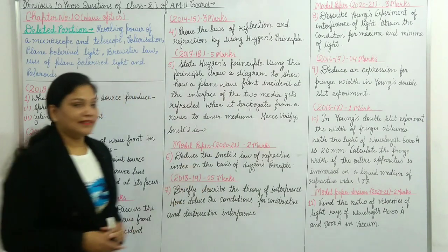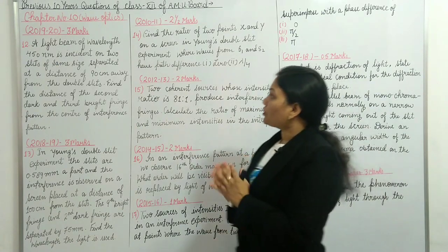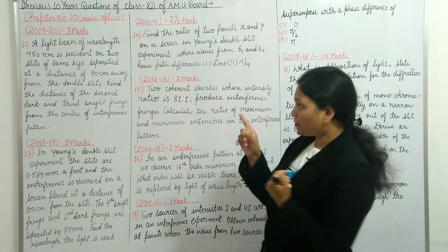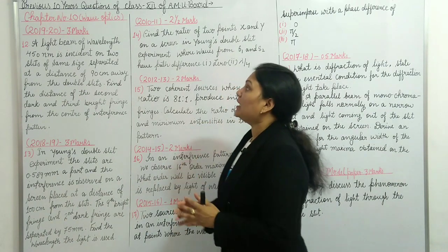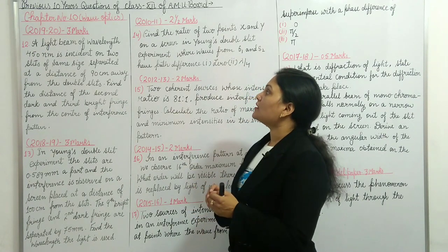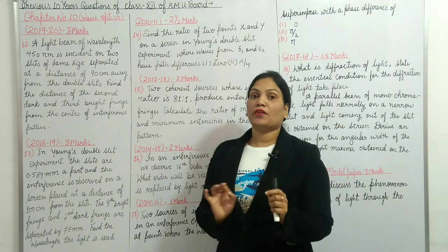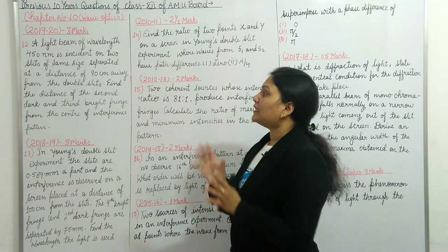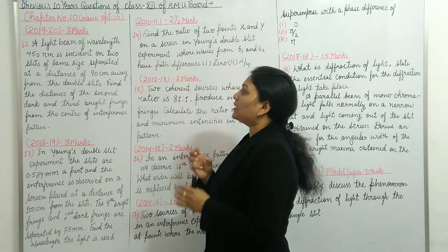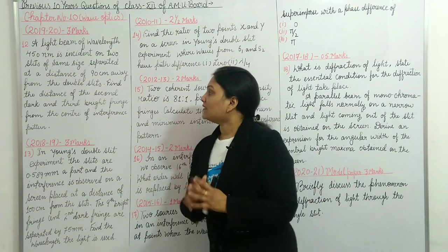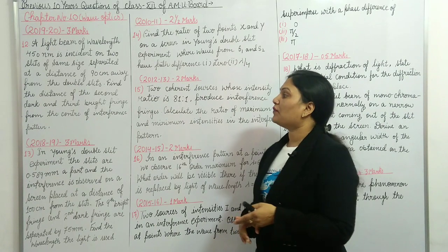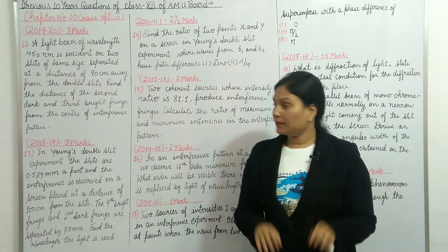Question number twelve: a light beam of wavelength 450 nanometers is incident on two slits of the same size, separated at a distance, and the screen is 90 cm away from the double slits. Find the distance of the second dark fringe and third bright fringe from the center of the interference pattern.